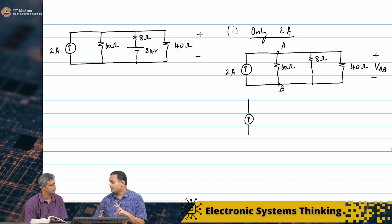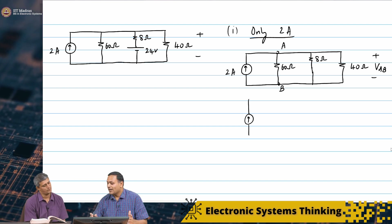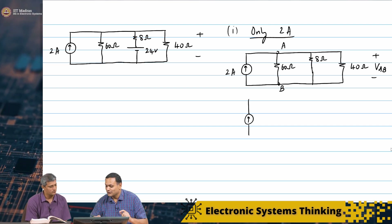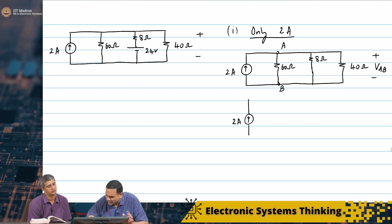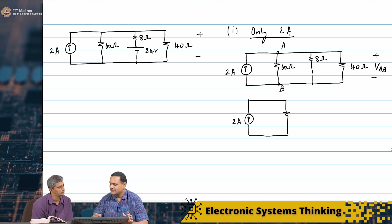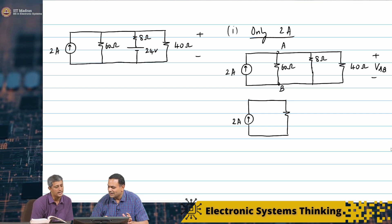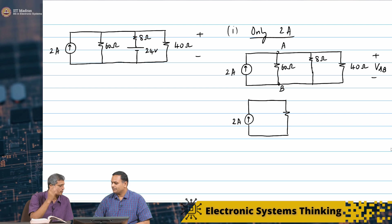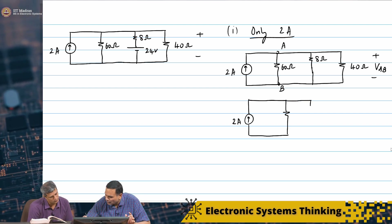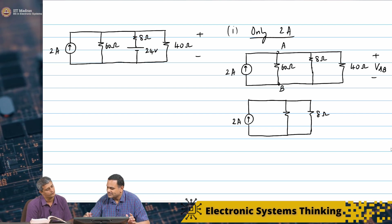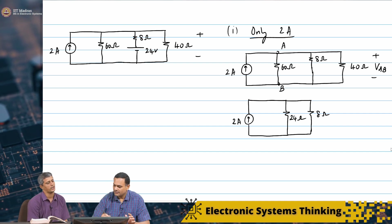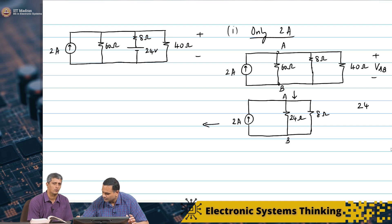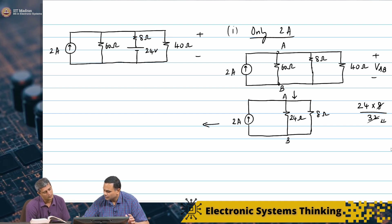The important thing for students to learn is that there are many ways of doing the problem — for example, I could also find out the current flowing through the 40 ohm resistor and then multiply that by 40. I have 2 amperes in parallel with my equivalent resistance, which is 60 parallel 40 parallel 8. Now, 60 parallel 40 is 2400 by 100, which is 24 ohms. Then 24 parallel 8 is 24 times 8 by 32, which is 6 ohms.